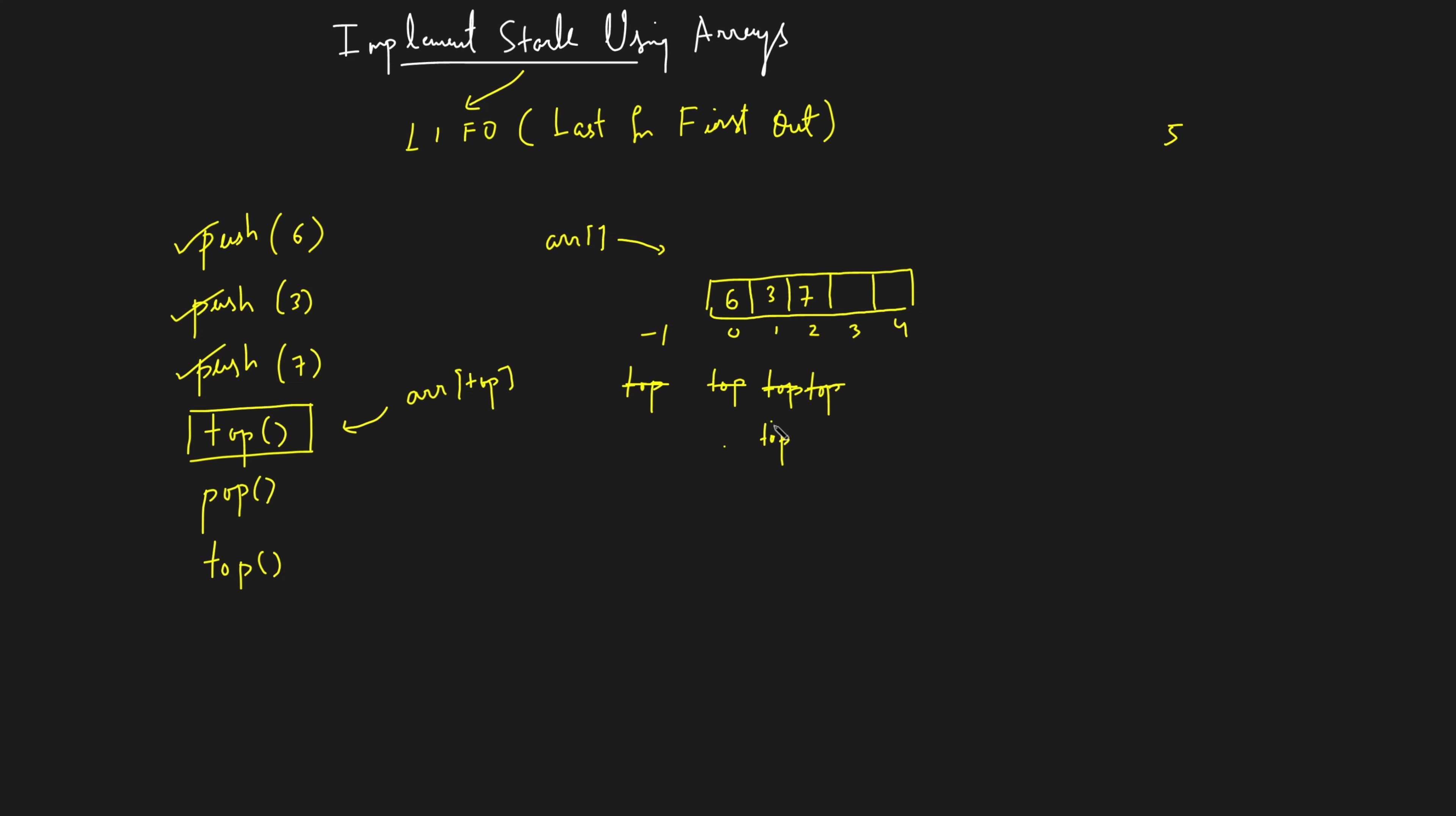Now let's say again someone comes up and says do the top operation. What this top operation means? Wherever the top is pointing. So where is the top pointing? It's pointing to the first index, so it will automatically give you 3. So this is how you will perform top, you'll just return whatever the top is pointing to.